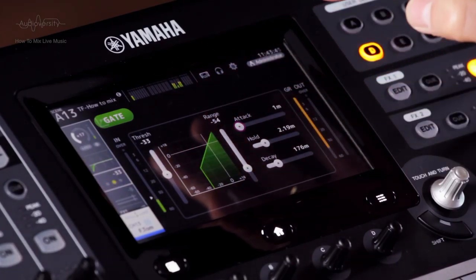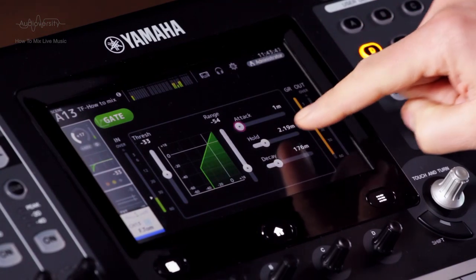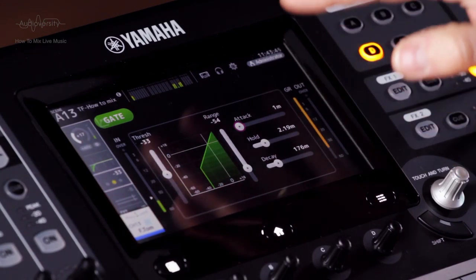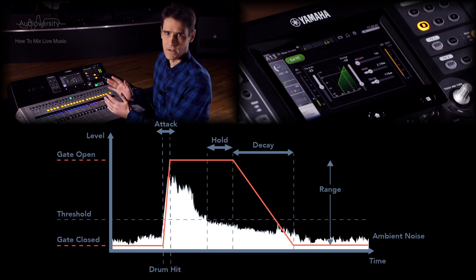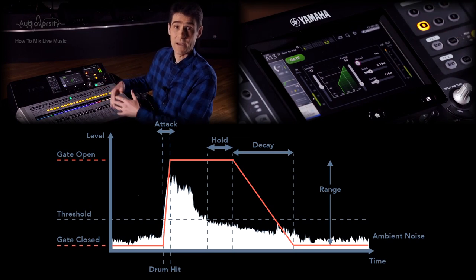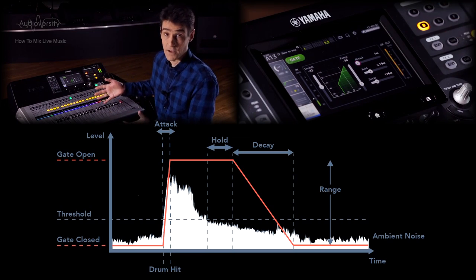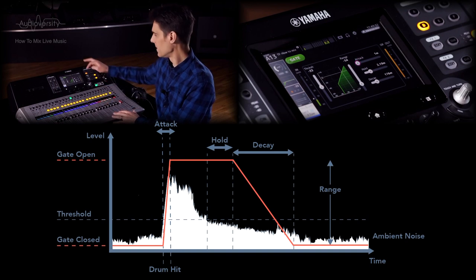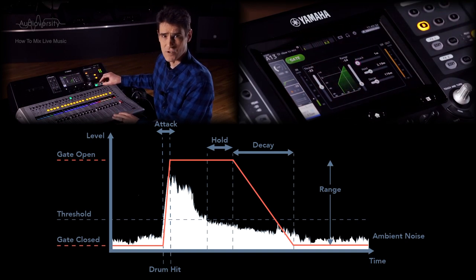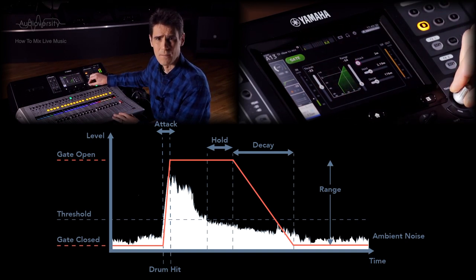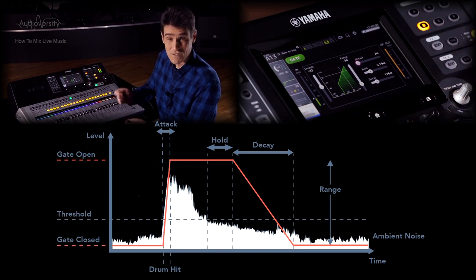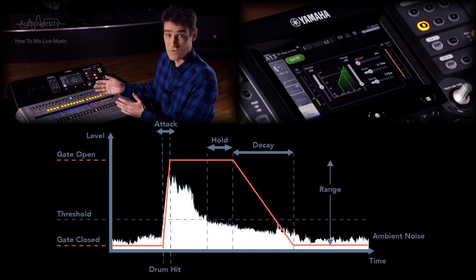Next we have attack, hold, and decay times. These can be used to shape the sound creatively, but we'll use them to keep the natural sound of the drums. Make the attack time very short — 0 or 1 ms — so we don't lose the fast transient response of the drums.